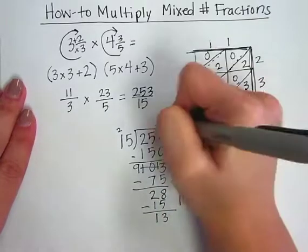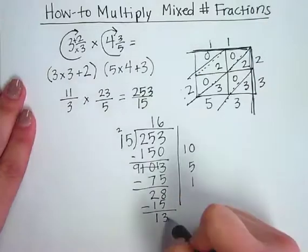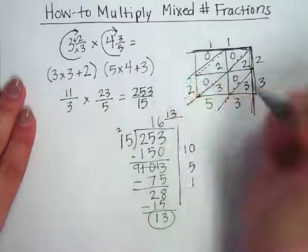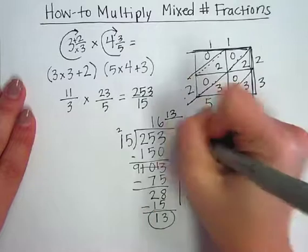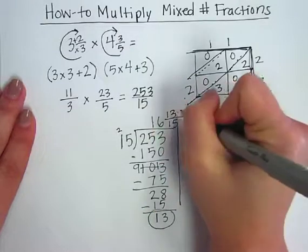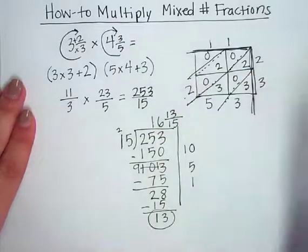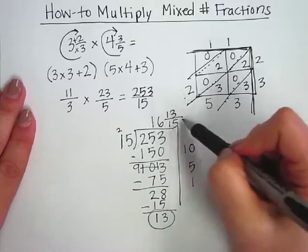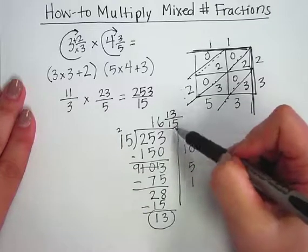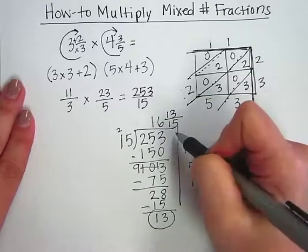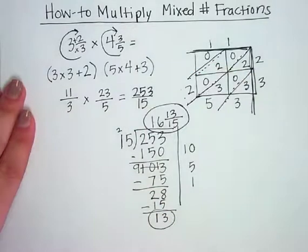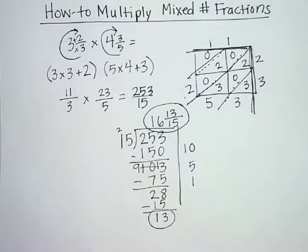So I add these up and I have 16 with my remainder of 13. And I use my original denominator, which was 15. So 16 and 13 fifteenths. If I could simplify here, I would. But I know that already that these numbers are simplified as much as they can. So that is my answer. 16 and 13 over 15. Thank you.